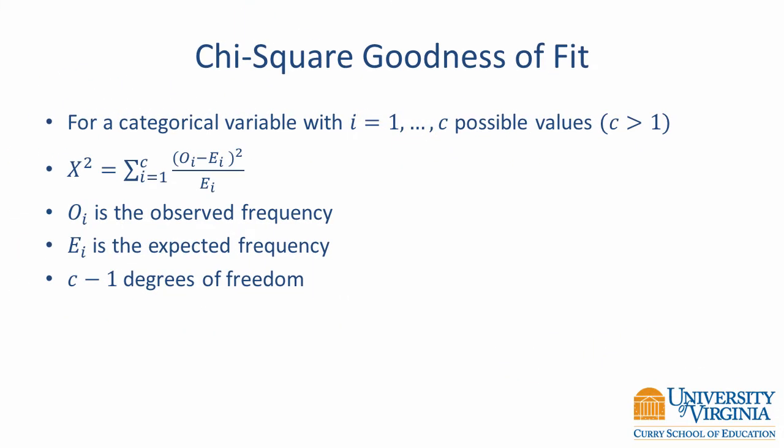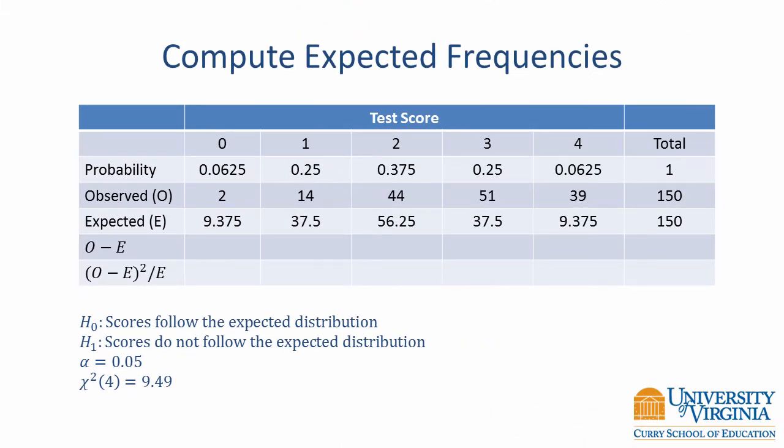For a categorical variable with i equals 1 to c possible values, the equation for the chi-square goodness of fit test is shown here. For each level of the categorical variable, take the square difference between the observed frequency and the expected frequency, divide this quantity by the expected frequency, repeat the calculation for every level of the categorical variable, and add them up.